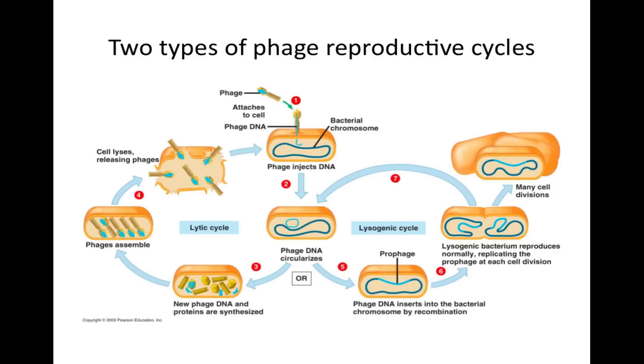The two types of phage reproductive cycles. First, a phage will inject its DNA into the bacterium. Next, the DNA will circularize. At this point, the phage's DNA may go into a lytic cycle where new phage DNA and proteins are synthesized. Then the phages assemble and the cell lyses, releasing the phages. The new phages will find new bacterium to inject their DNA, but now the phage DNA will go through a lysogenic cycle. The lysogenic cycle inserts the phage's DNA into the bacterial chromosome by recombination. In this cycle, the lysogenic bacterium reproduces normally, replicating the prophage at each cell division. Note that either cycle may be used once the phage DNA is inside the bacterium.